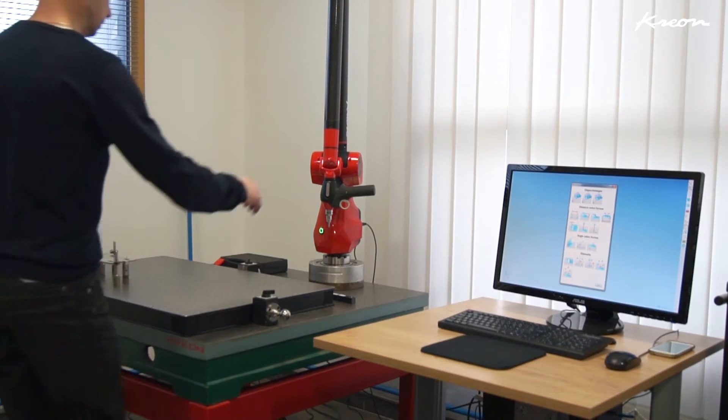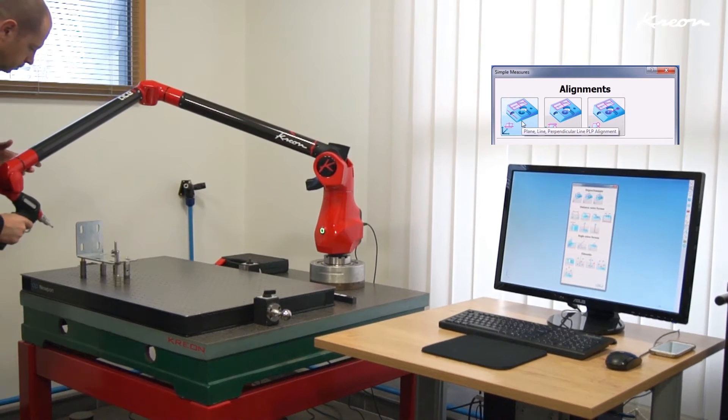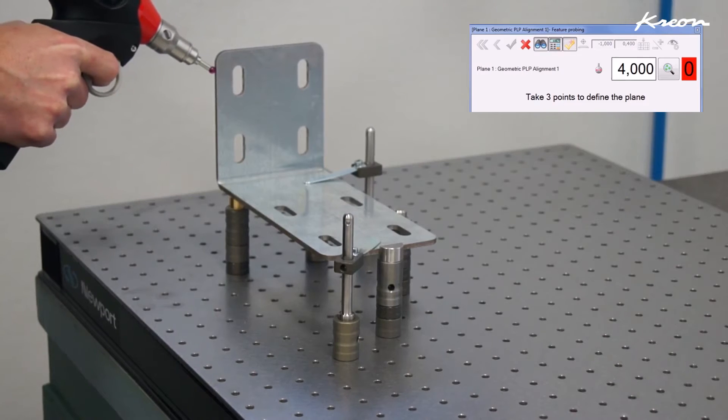We will start with the alignment of the part. We will use the PLP alignment method using a plane and two lines to align the part to the XYZ axis.